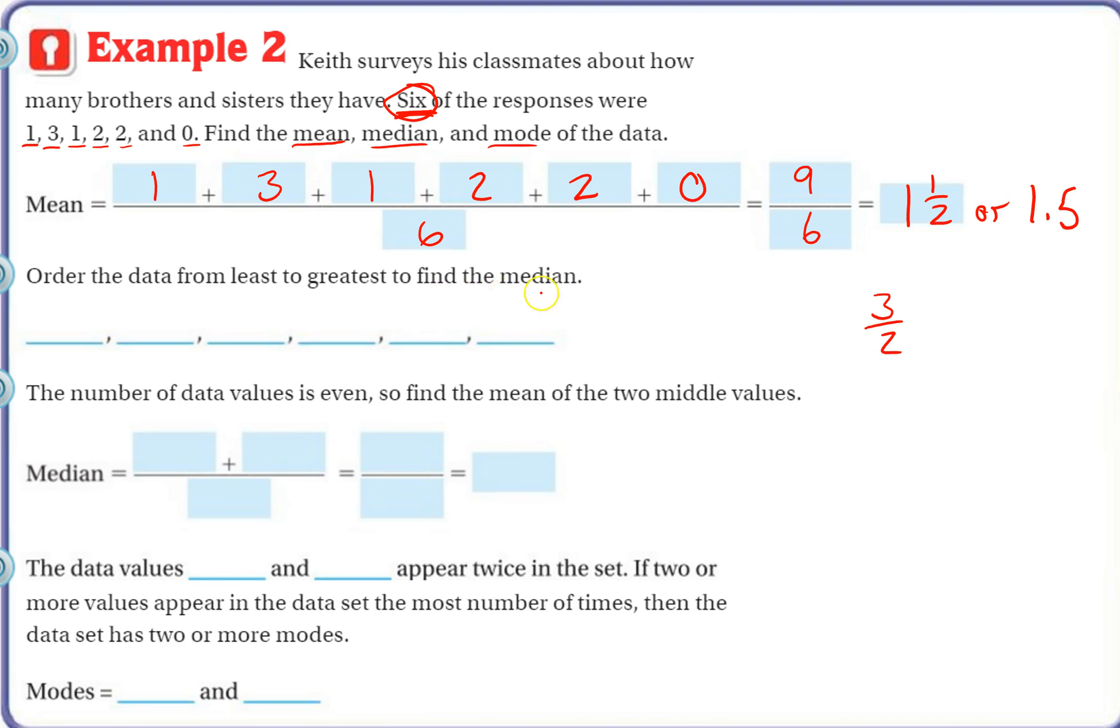Order the data from least to greatest to find the median. So zero is first, then we have two ones, and we have two twos, and then we have a three. Start on either end.